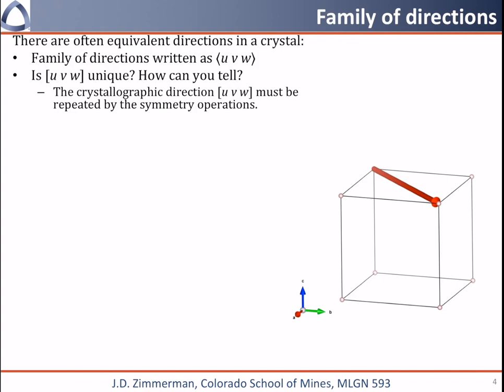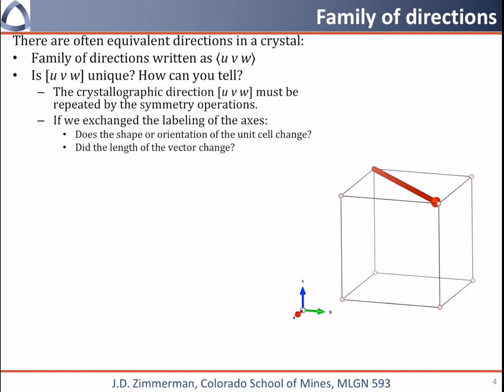For now, we'll talk about the maximum possible multiplicity, or the maximum possible number of directions in a family. The first thing I would do is look at the unit cell and think about what would happen if we exchanged the labeling of the axes. If the shape of the unit cell does not change when you exchange a and b, for example, you would be able to exchange u and v in the crystallographic direction, and it would still be a member of the family. Another thing you can think about is did the length of the vector change? If two directions are equivalent, the length of those two crystallographic directions will be the same. Finally, the cell must be identical when viewed along different members of a family of directions.